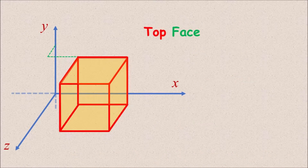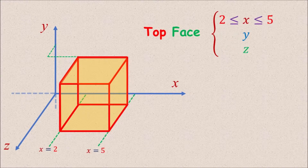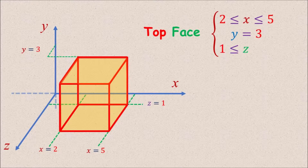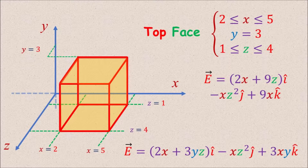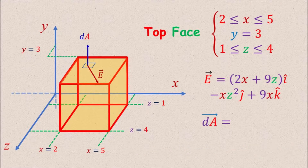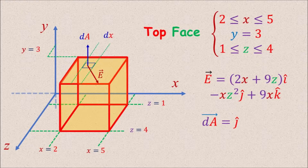Let's start by calculating the flux through the top face. The top face is the region mathematically defined by x between 2 and 5, y equal to 3, and z from 1 to 4. Since y is equal to 3 for this face, we find the E field on this face by substituting 3 for y in the E field formula, giving E equal to (2x + 9z) i-hat minus xz² j-hat plus 9x k-hat. The vector dA is perpendicular to the surface and outward, so it is in the positive y direction, with magnitude dx dz. Thus dA equals dx dz j-hat.